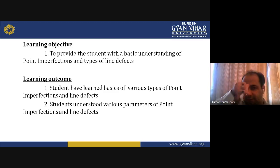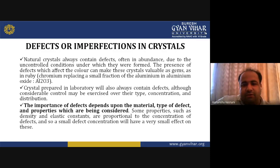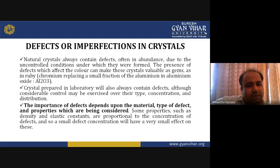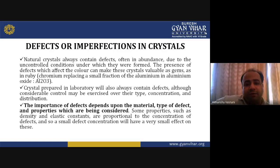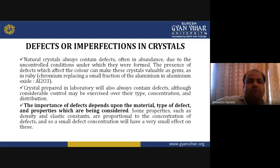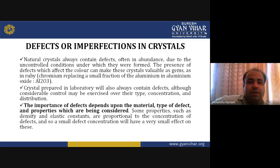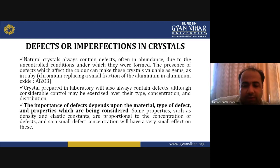What do we mean by defects or imperfections in crystals? Natural crystals always contain defects, often in abundance due to uncontrolled conditions under which they were formed. The presence of defects which affect color can make crystals valuable as gems — for example, certain ruby has chromium replacing a small fraction of aluminum in aluminum oxide (Al2O3).